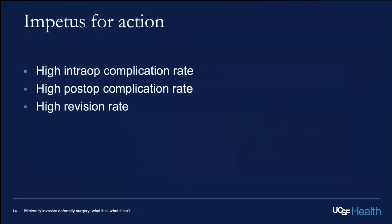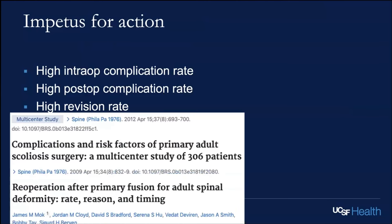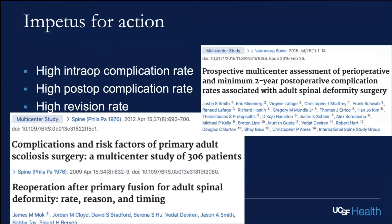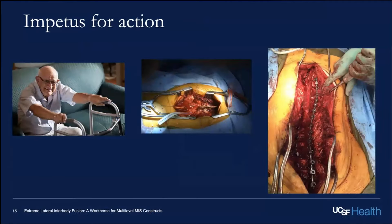Why do we have MIS techniques? Because open deformity surgery has a high complication rate — intra-op, post-op — and a high revision rate. The problem at hand is that we have an increasingly frail population that we perform surgery on, and the approach has to match their condition.